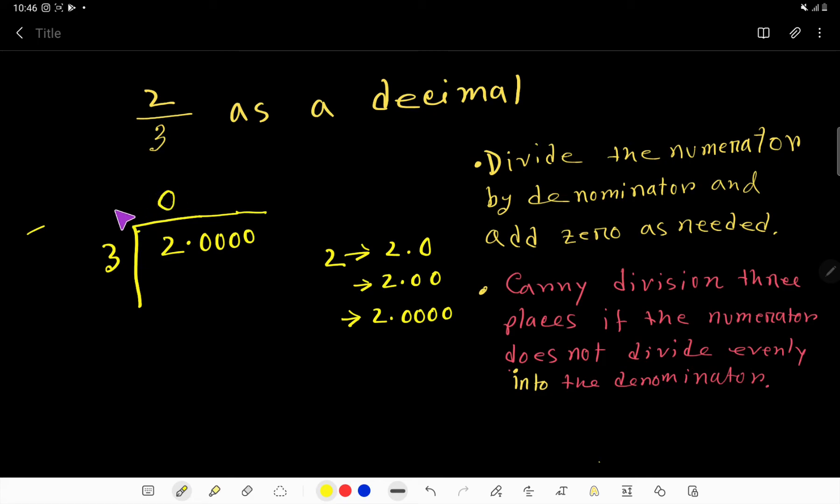Now you have to multiply these quotient to this divisor. So 0 times 3, that is zero. Now you need to subtract. If you subtract, then you will get 2.